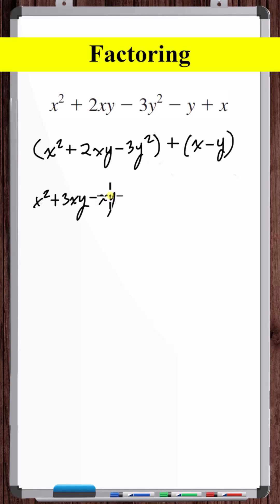So let's rewrite this. Now let's apply grouping here. We'll group the three xy, the minus three y squared, and the x squared, and the minus xy.